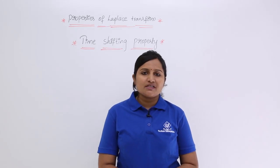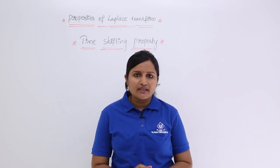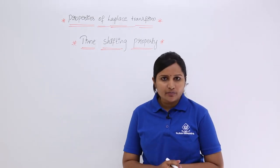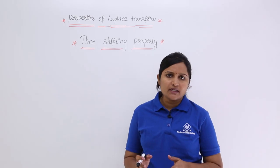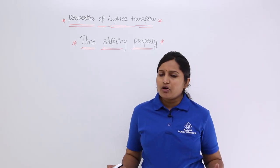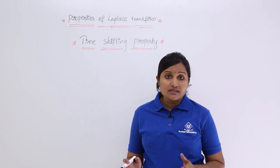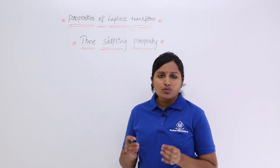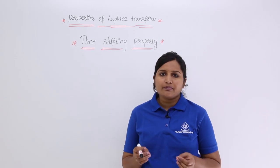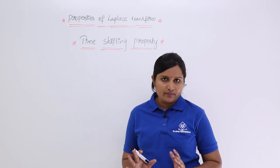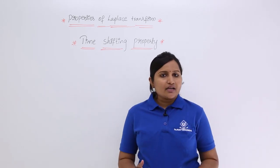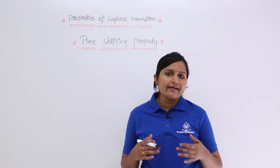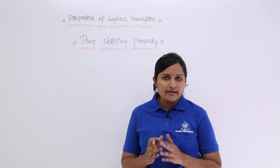In this video we are going to discuss the time shifting property in Laplace transform. This is somewhat similar to the time shifting property in Fourier transform. In fact, all properties of Laplace transform are similar to Fourier transform properties — the difference is we place S in place of omega. That means we are covering both sigma and omega, that is, real and imaginary domains combined in the S plane.